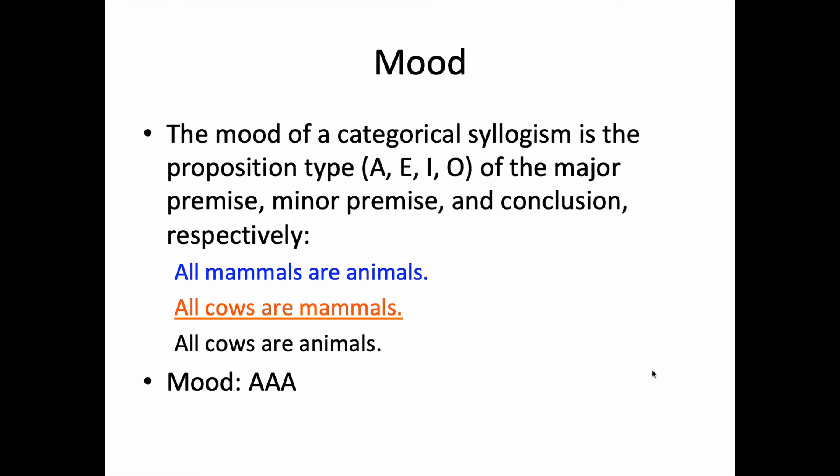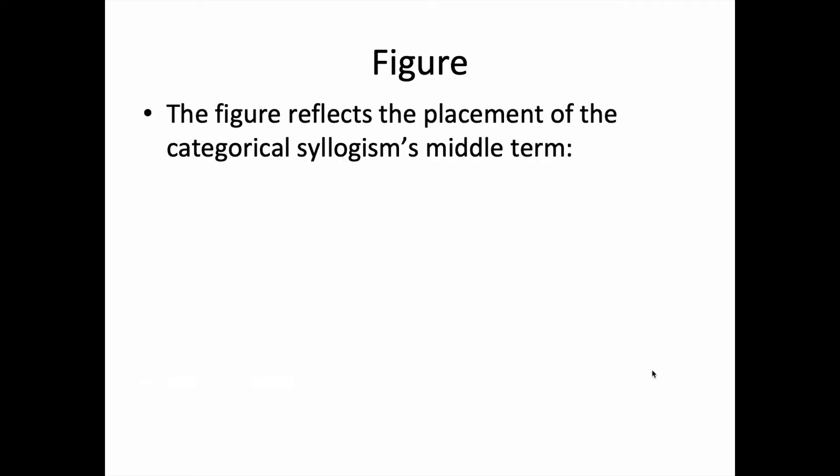Now, let's take a look at figure. The argument's figure reflects the placement of the categorical syllogism's middle term. In our example, notice that the middle term is mammals, that's the repeated term in the premises, it drops out in the conclusion. Notice the placement of the middle term in the major and the minor premises, respectively.